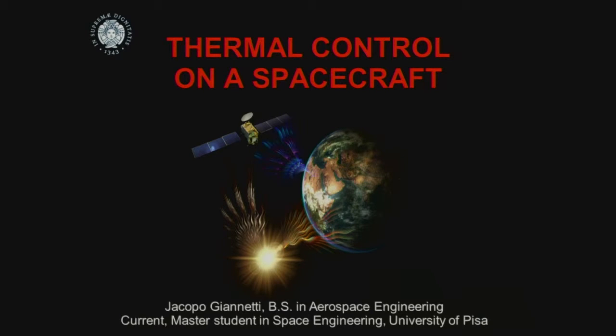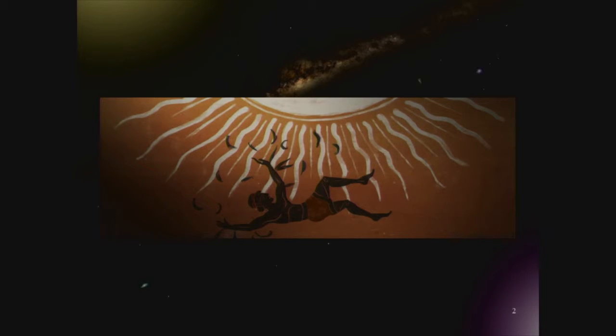It is a very ancient problem because the first one who faced this kind of situation was Icarus, because he flew too high, close to the sun, as we can see, and the high temperature melted the wax of his wings. Then we have to take control of the temperature with heat.